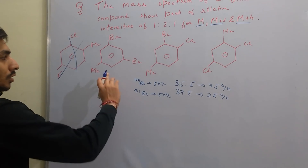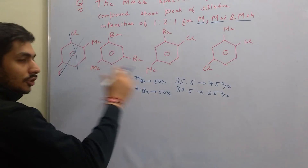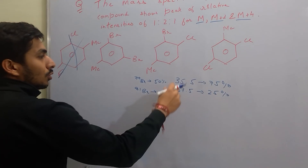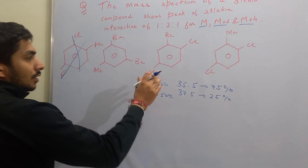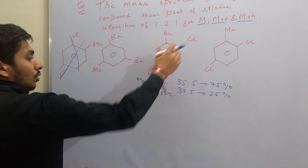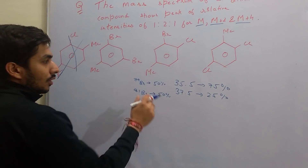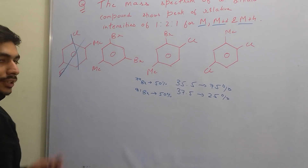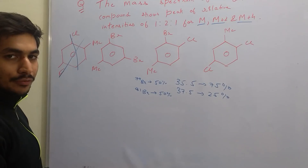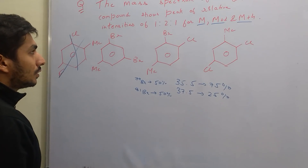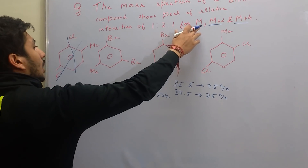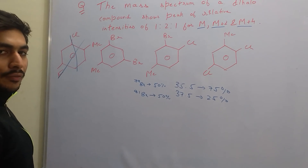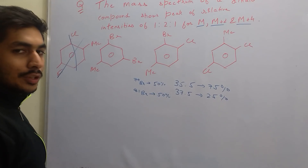Looking at the remaining three options: we have two chlorines, which can give M+4 if both are the heavier isotope; one bromine and one chlorine, which can also give M+4; and then two bromines, which can also give M+4. Now, what you have to do is calculate the relative intensities. I will solve for the two-bromine option — you can solve for the rest.